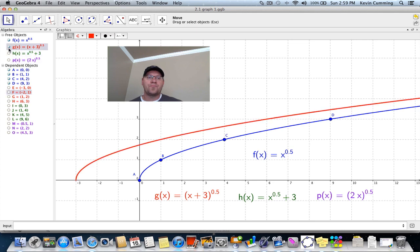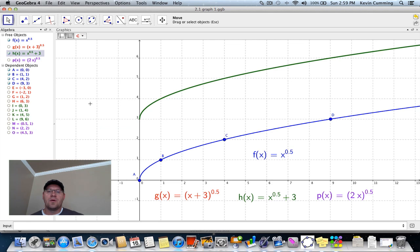Our next graph that we're going to take a look at is h(x), where it's x to the power of 0.5, and then we add a 3 onto that whole function. Which means that we should have a vertical shift of 3 units up. When we take a look at our green graph, it is definitely 3 units higher in every point.